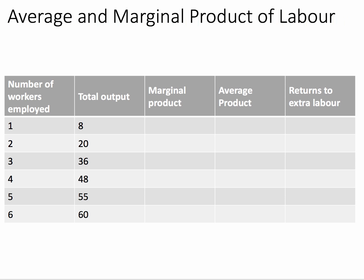Here's an example. The firm is adding workers from one through to six, and with each successive worker the total output increases from 8 to 20 to 36, and so on. From this data we can calculate marginal product. The first worker adds 8, the second worker adds 12, the third worker adds 16. But the fourth worker only adds 12, the fifth just 7, and the sixth just 5.